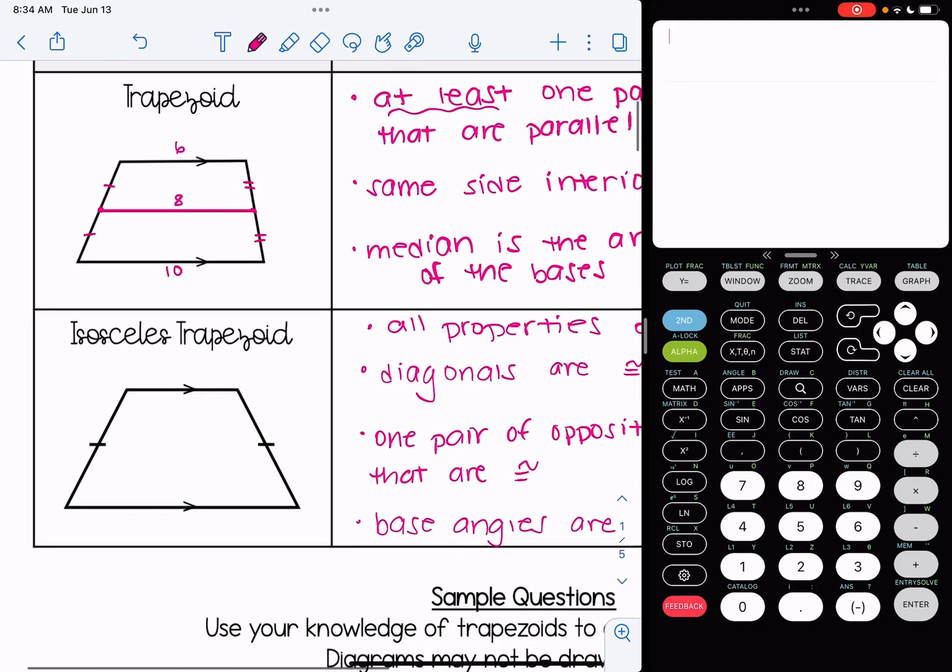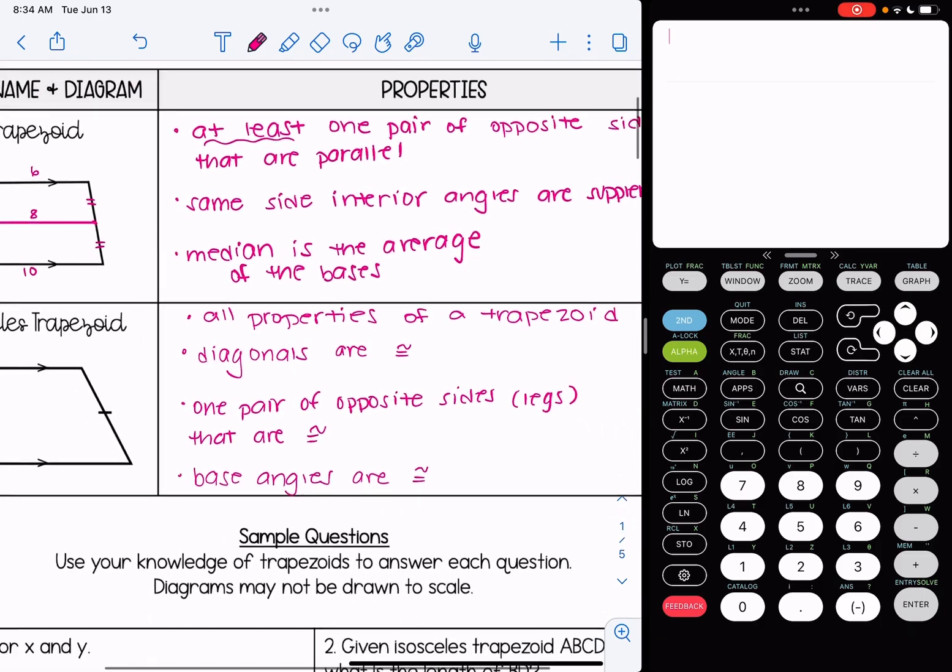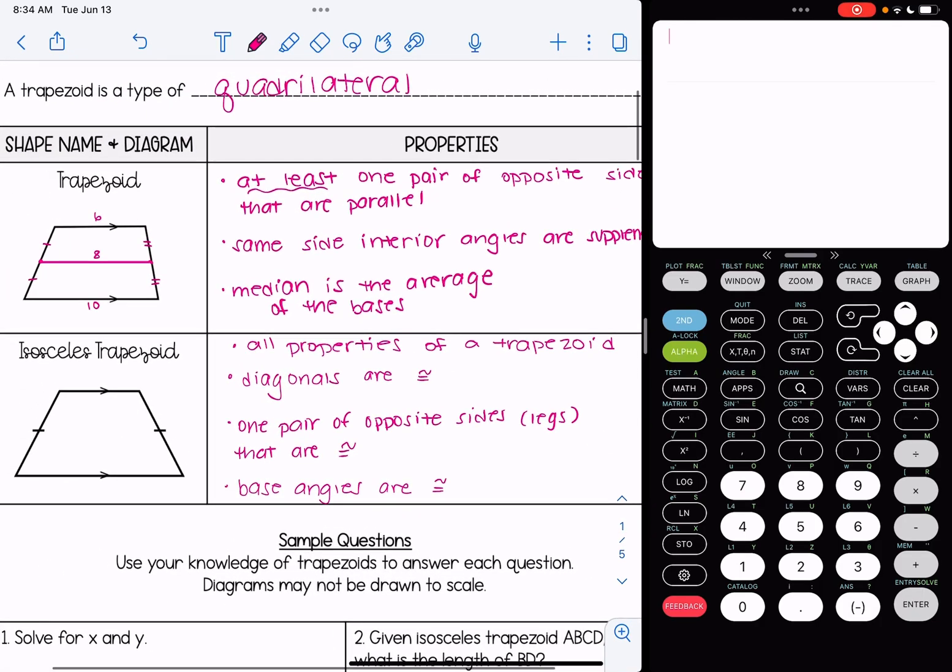Now, if we're talking about isosceles trapezoids, since it is a type of trapezoid, it inherits all of those properties we just talked about for general trapezoids. But in addition...